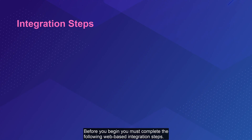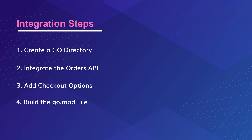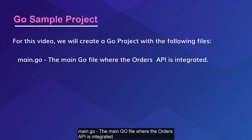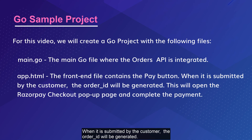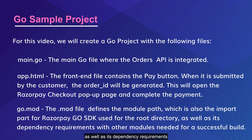Before you begin, you must complete the following web-based integration steps. For this video, we will create a Go project with the following files: the main Go file where the Orders API is integrated, the front-end file containing the pay button. When it is submitted by the customer, the order ID will be generated, opening the Razorpay checkout page to complete the payment. The .mod file defines the module path, which is also the import path for the Razorpay Go SDK, along with its dependency requirements with other modules needed for a successful build.